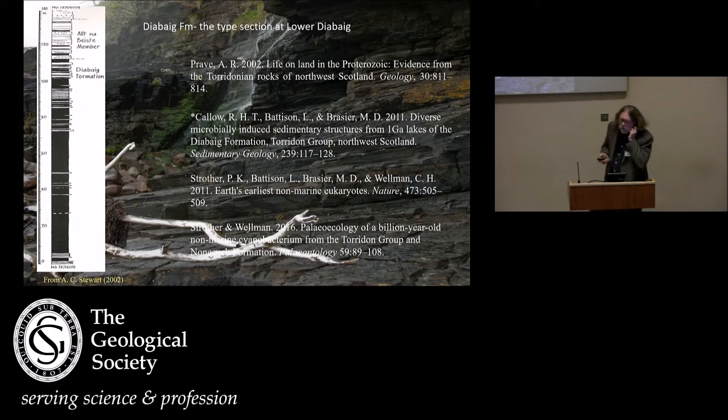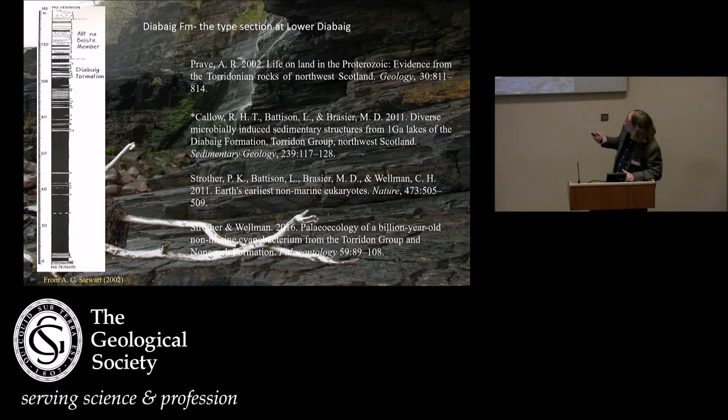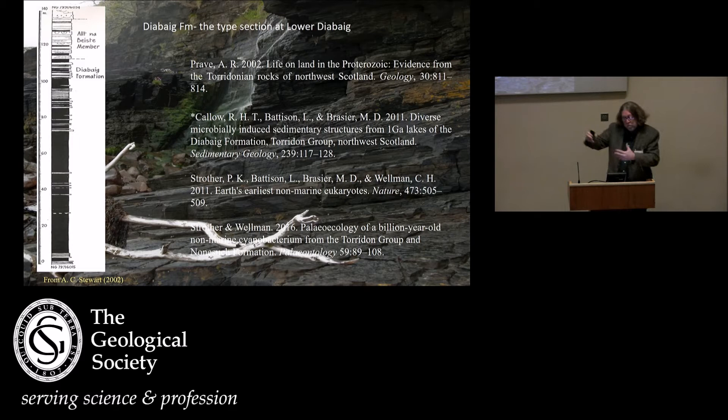The microbial mats — the MISS — are fairly well known. There's a pretty good history of description of these things. I think the best paper right now is this one here, in terms of describing the patterns and the microbial mat structures. Here's from Stuart's monograph showing the section. We have about 100 meters of shale, and then once the sandstone comes in, the stratigraphy moves into the Apple Cross formation.